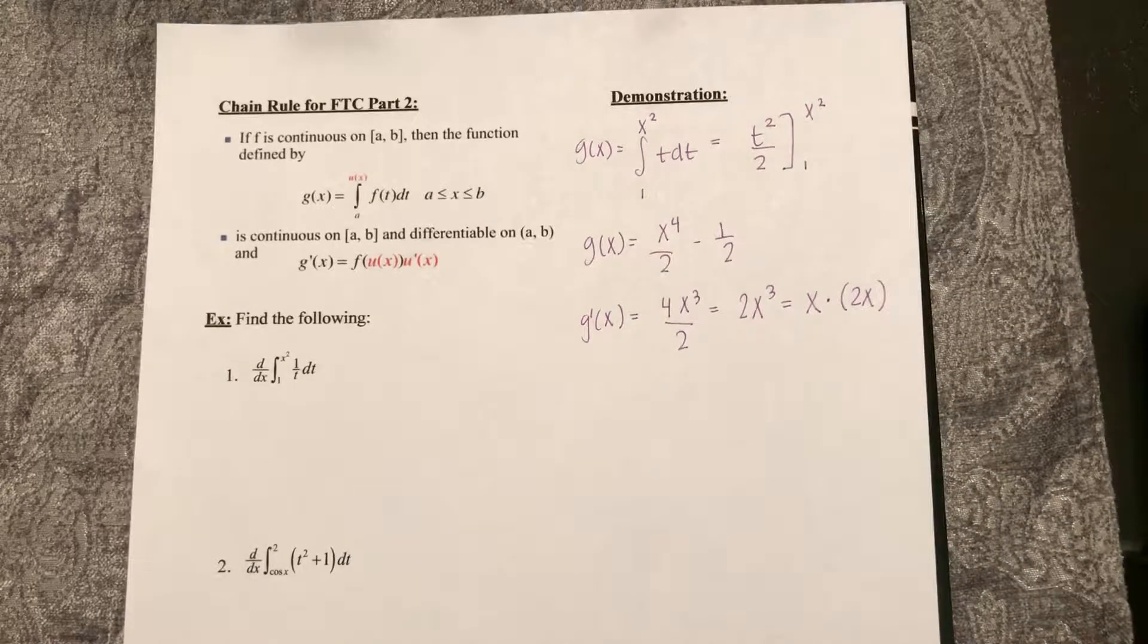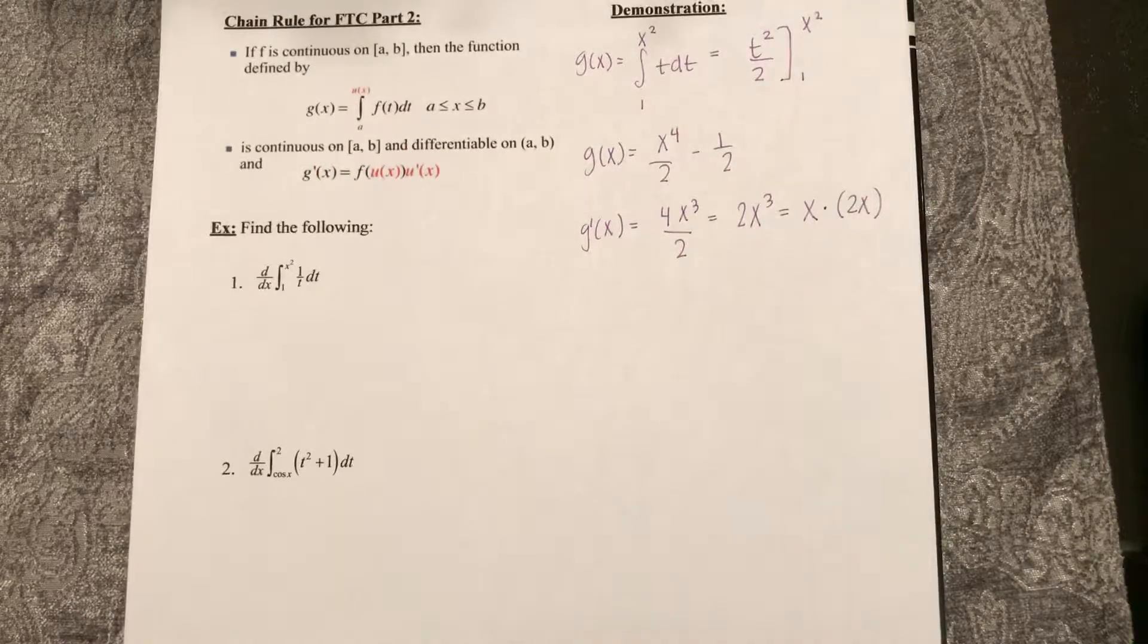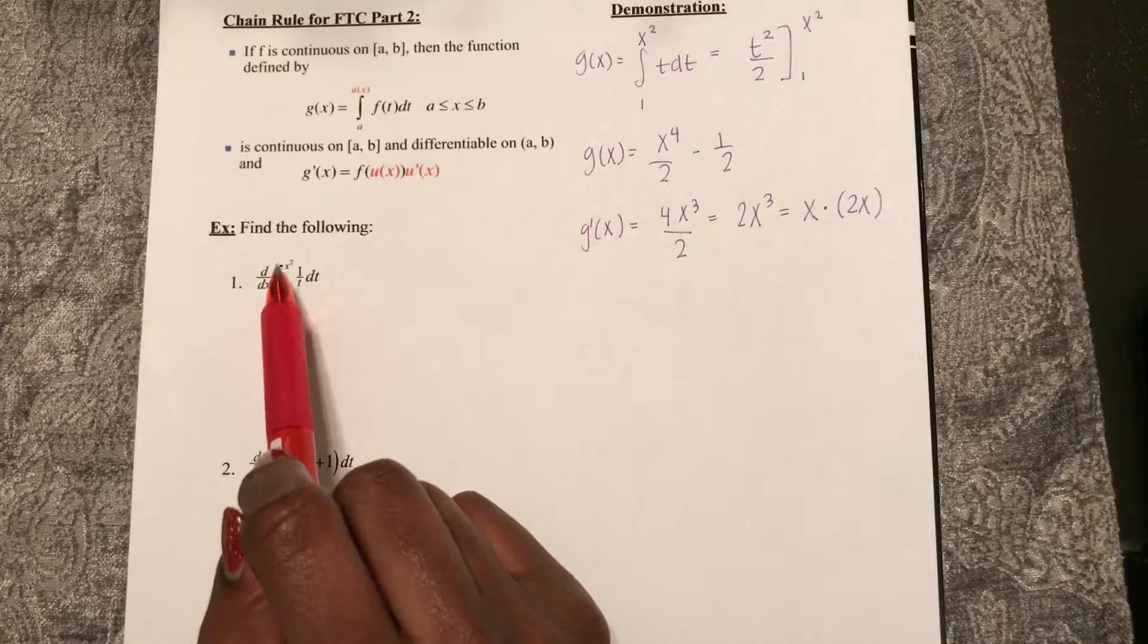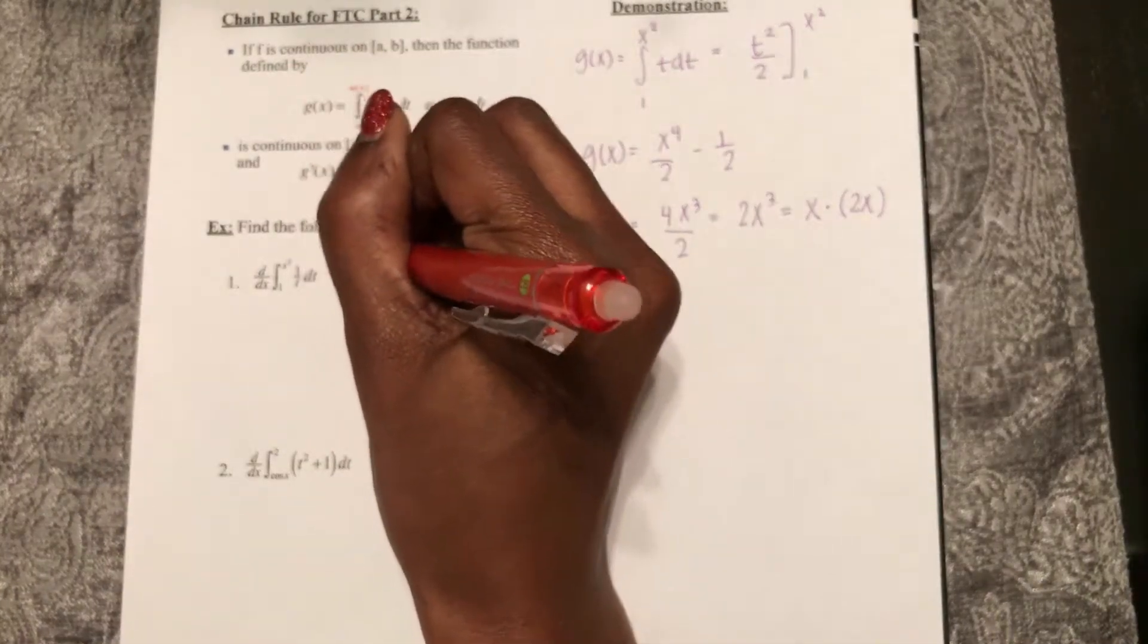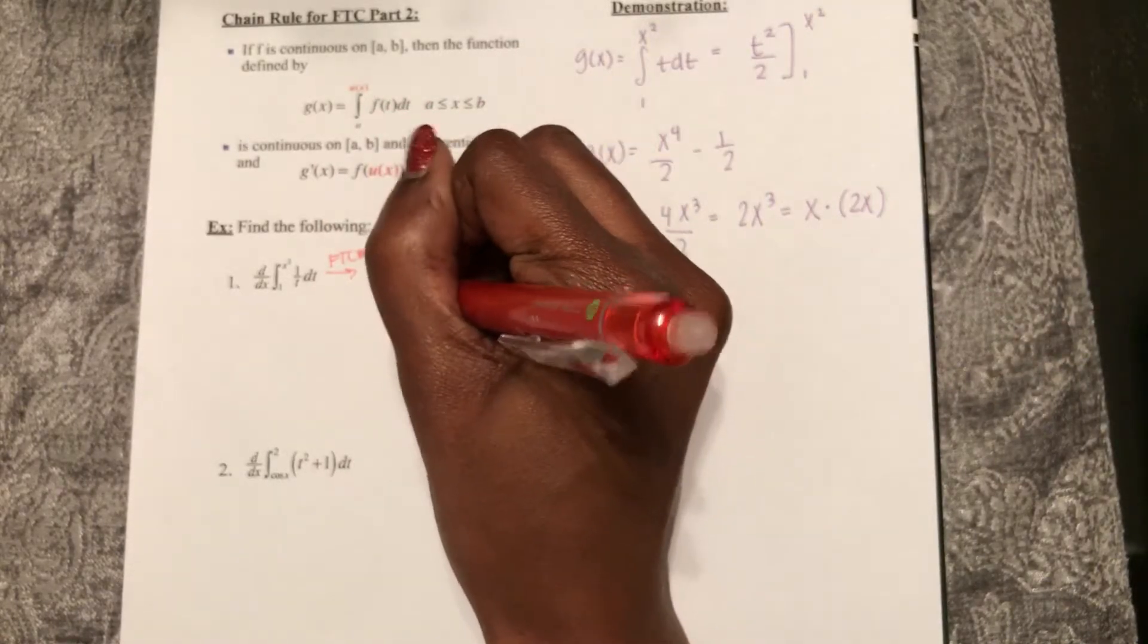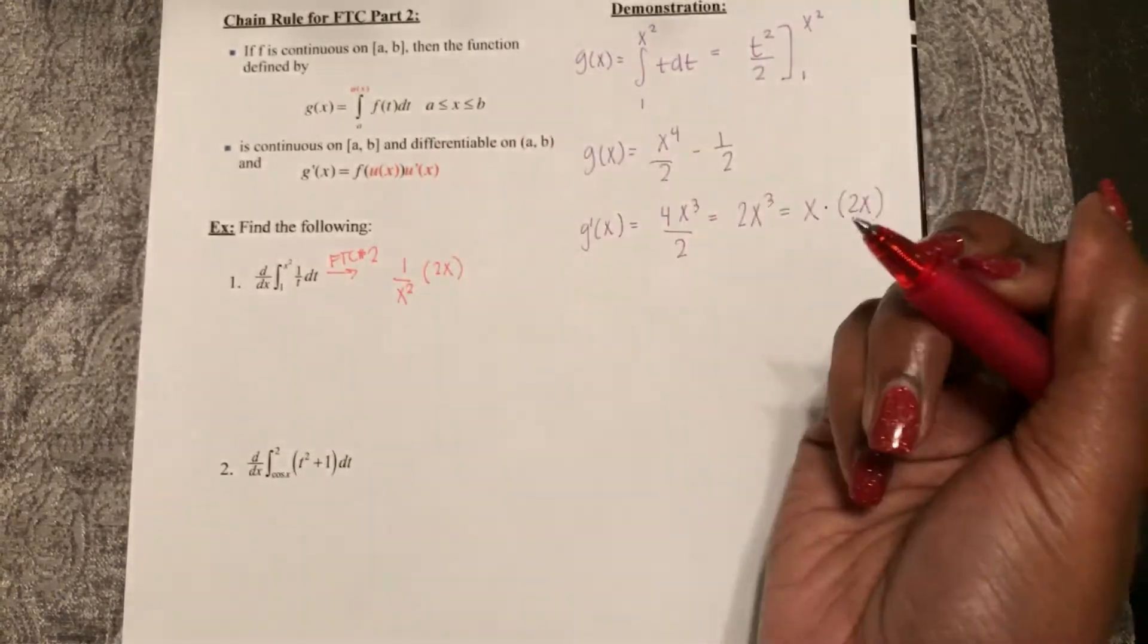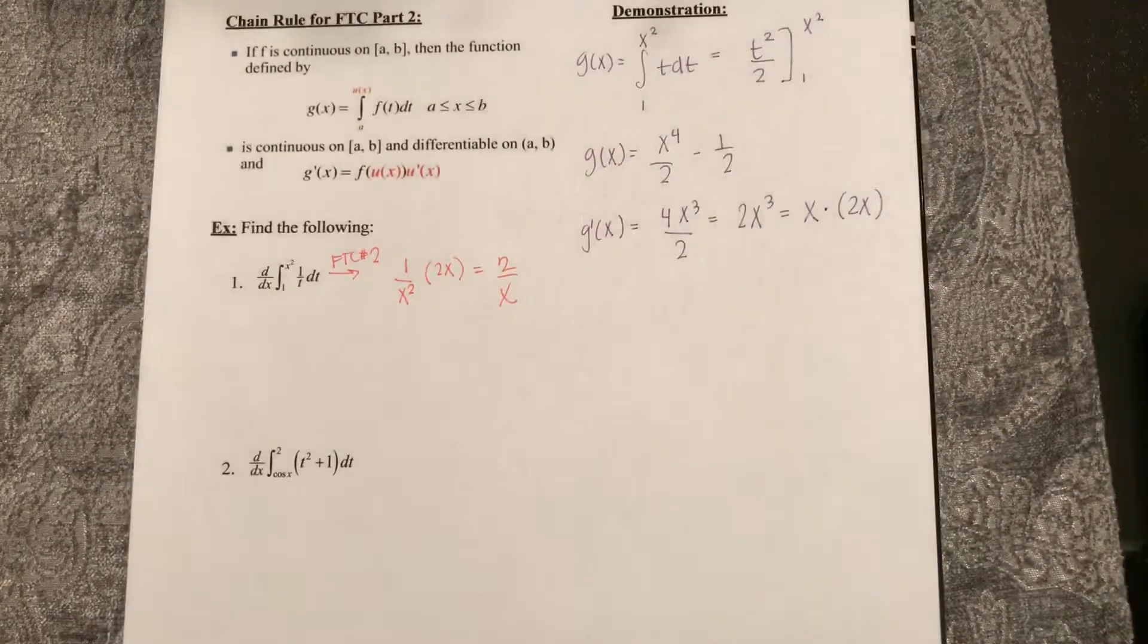So let's go ahead and apply that in the first example below. We're trying to take the derivative with respect to x of this definite integral from 1 to x squared by FTC number 2. That is going to be 1 over x squared multiplied by the derivative of x squared, which is 2x. So it will equal 2 over x.